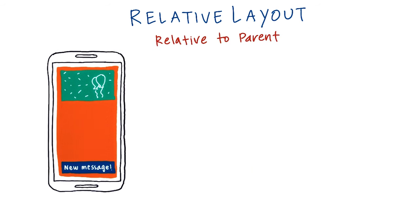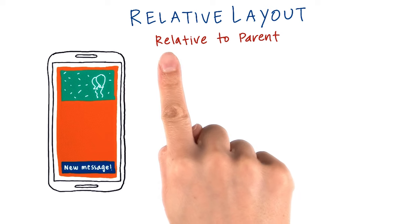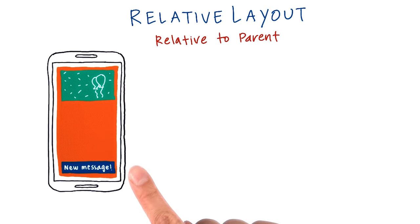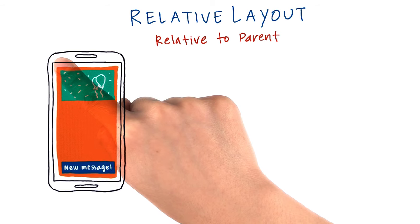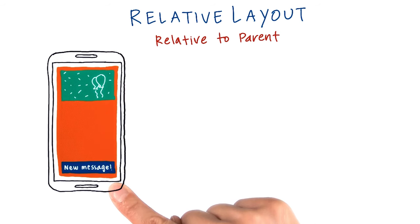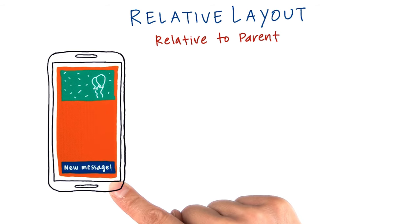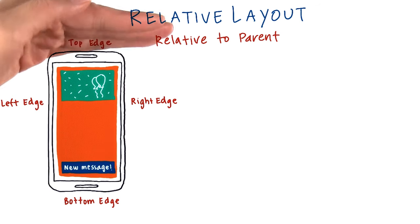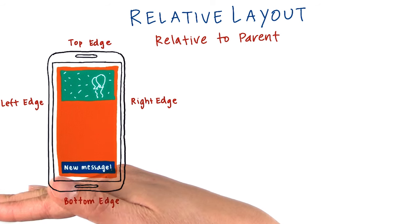Let's focus first on the case where views can be positioned relative to the parent. For this example, this parent relative layout is set to have width of match parent and height of match parent, so it's as big as the device. The children inside the relative layout can be positioned relative to the parent's left, top, right, or bottom edges.